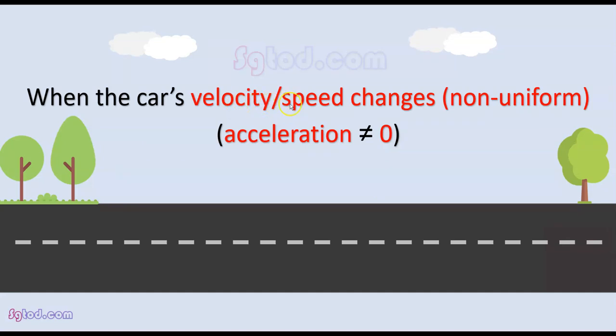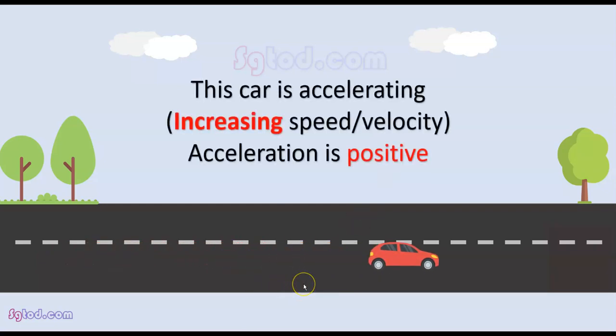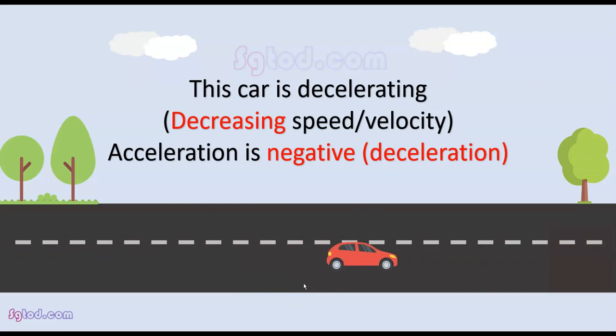When an object's velocity is non-uniform, the velocity changes over time. The object is either accelerating with increasing speed, or decelerating with decreasing speed. Deceleration is also known as retardation or negative acceleration.